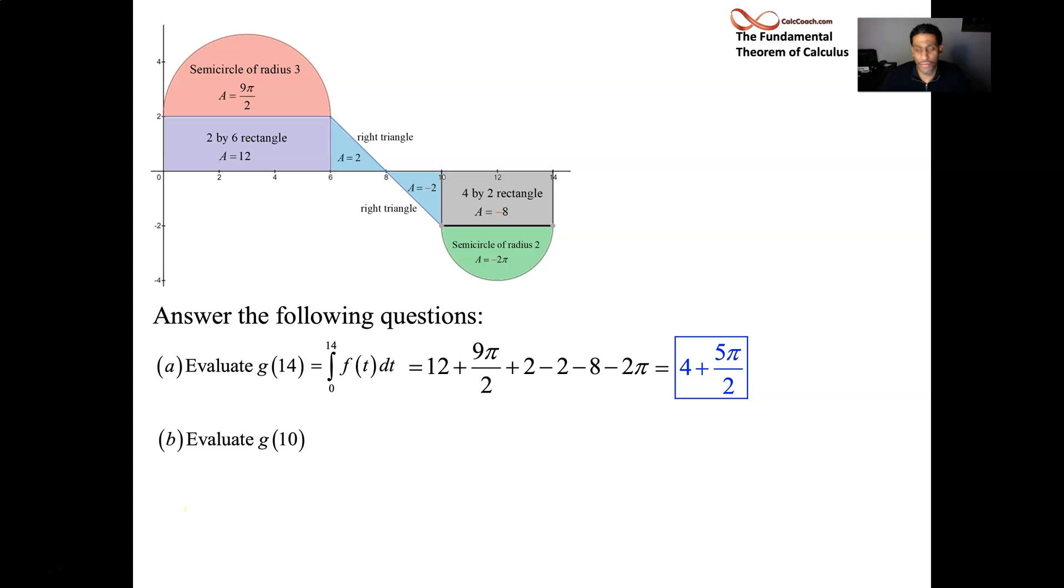How about the area from 0 to 10? That just means you don't have everything now. You have the red and the purple and the two blue. They stop at 10. You don't get the gray rectangle. You don't get the green semicircle. So it has the same initial parts, but it stops at the 10. x equals 10, which is the second triangle, the first negative area triangle there. And those two's cancel out. So 12 plus 9 pi over 2. And that's more than the previous answer because if we keep going, we're taking away from this value. So it's going to get smaller.